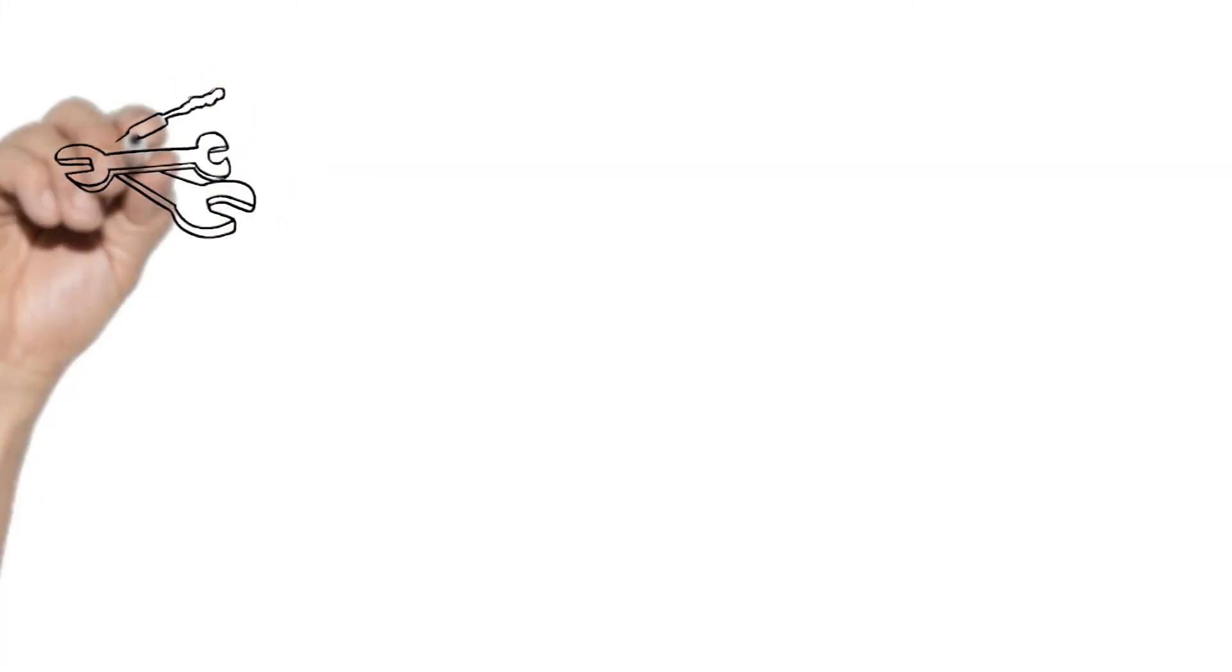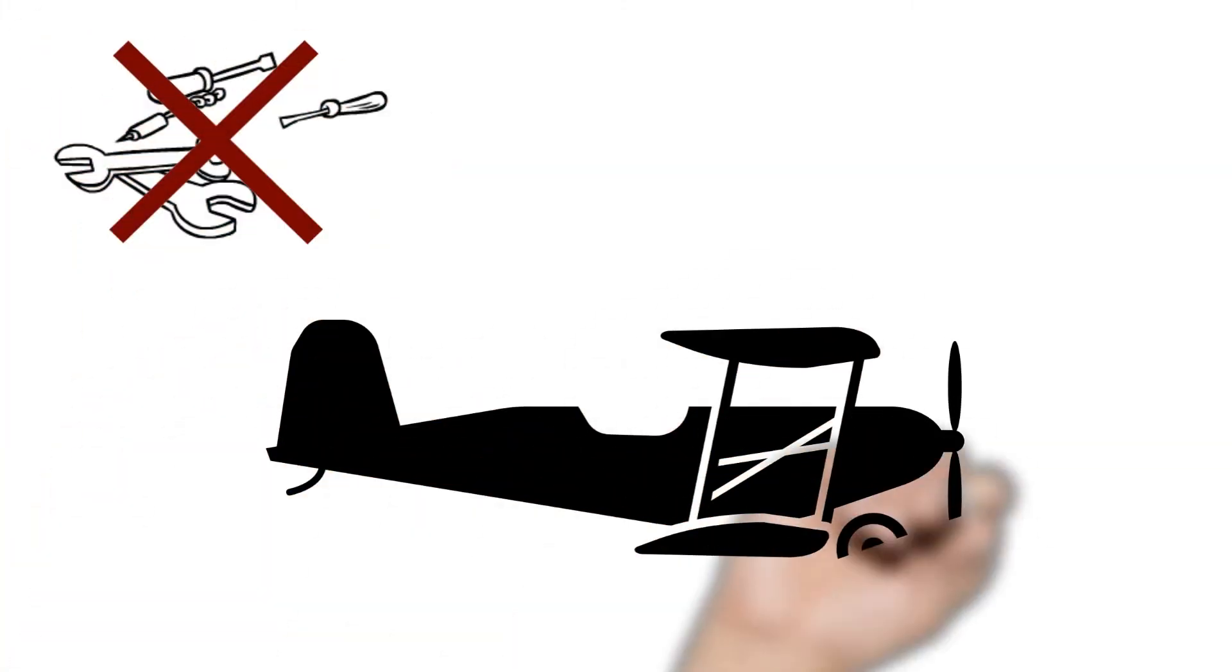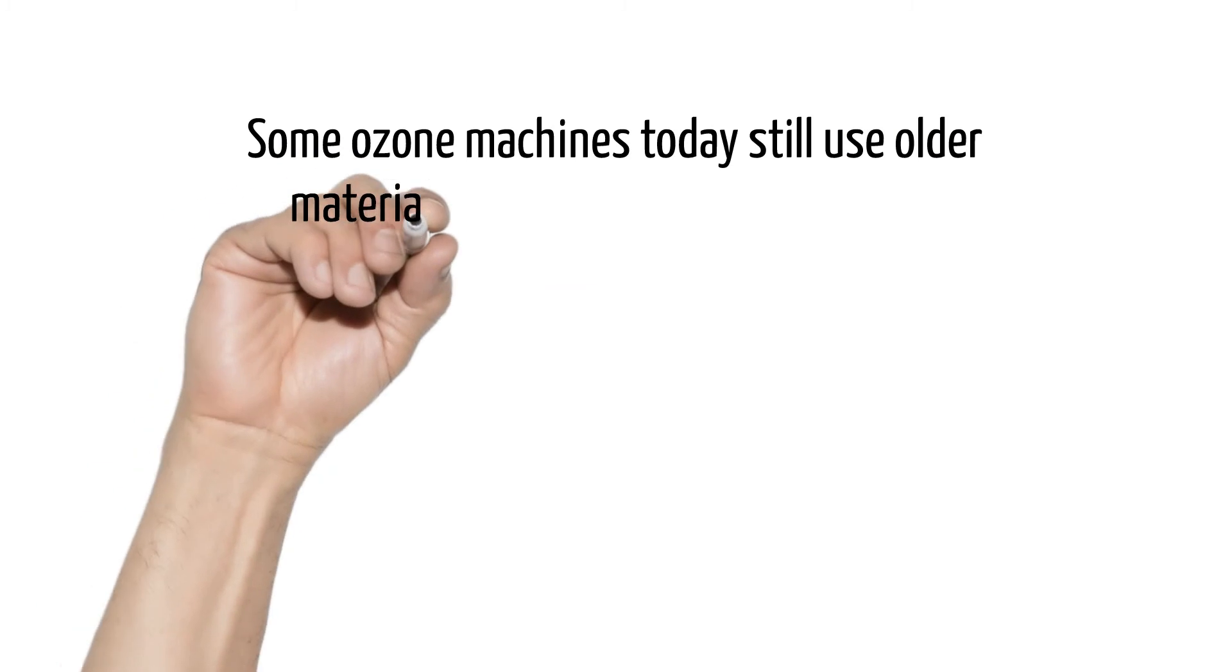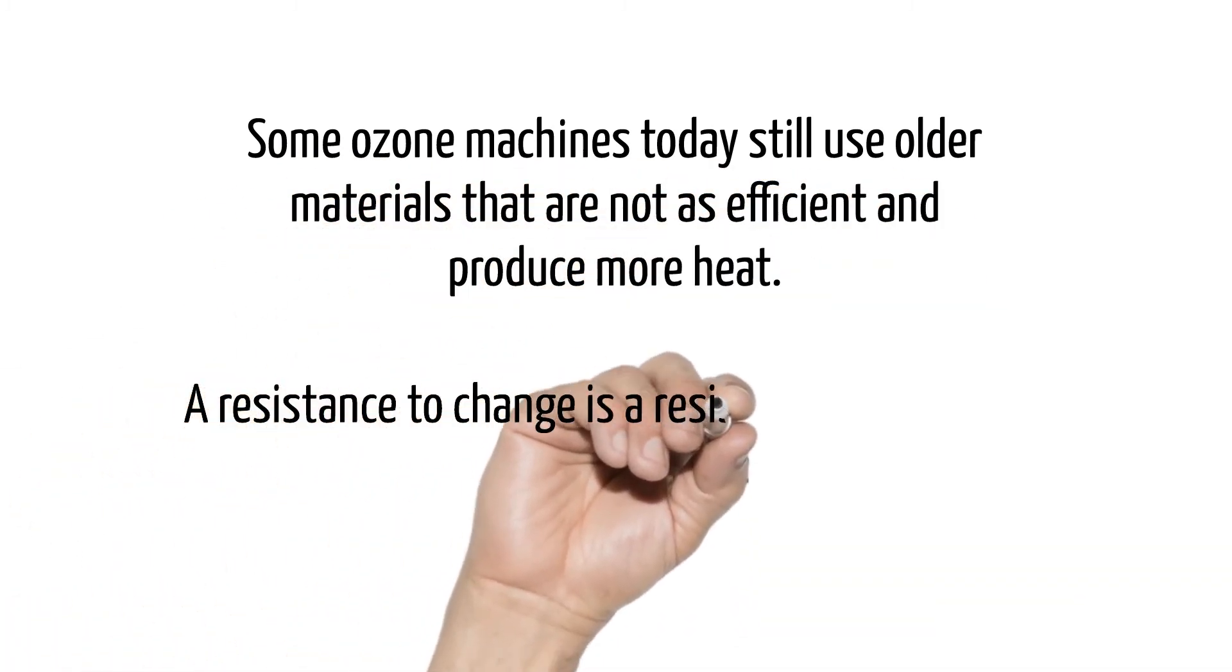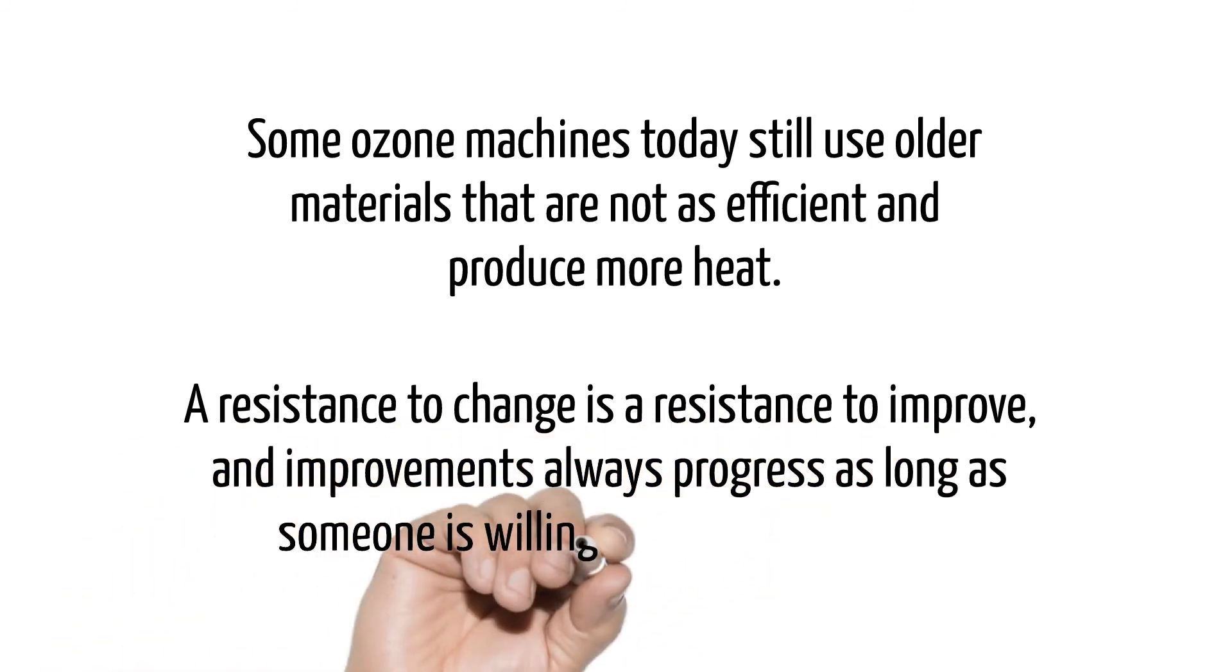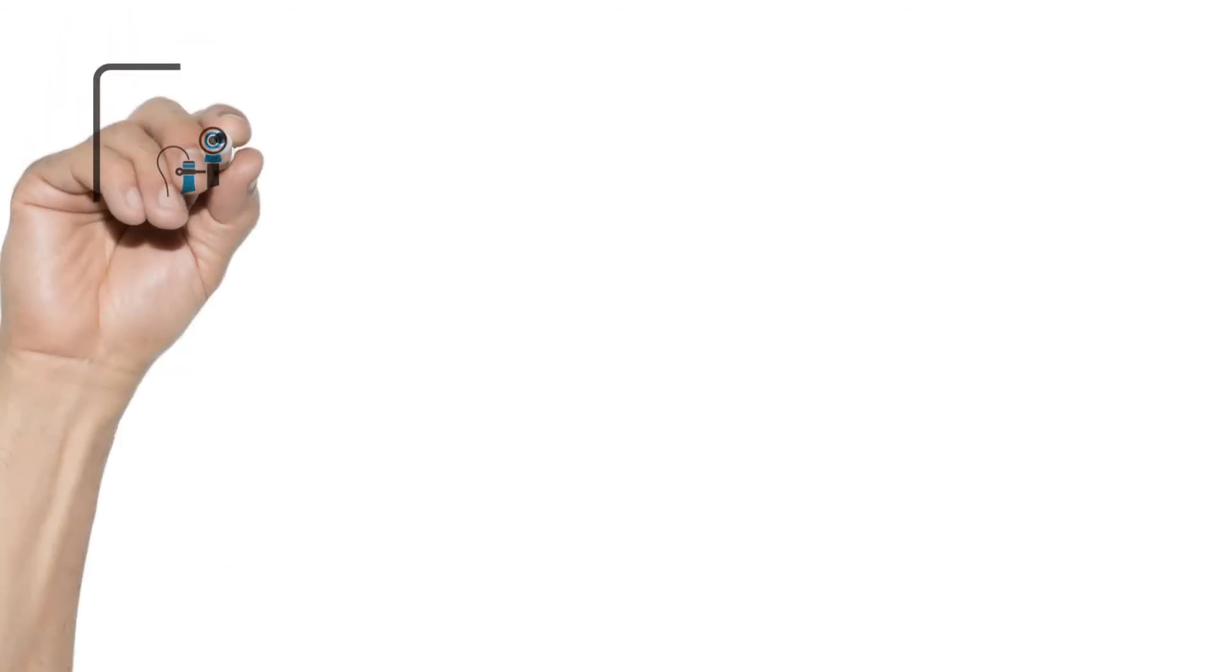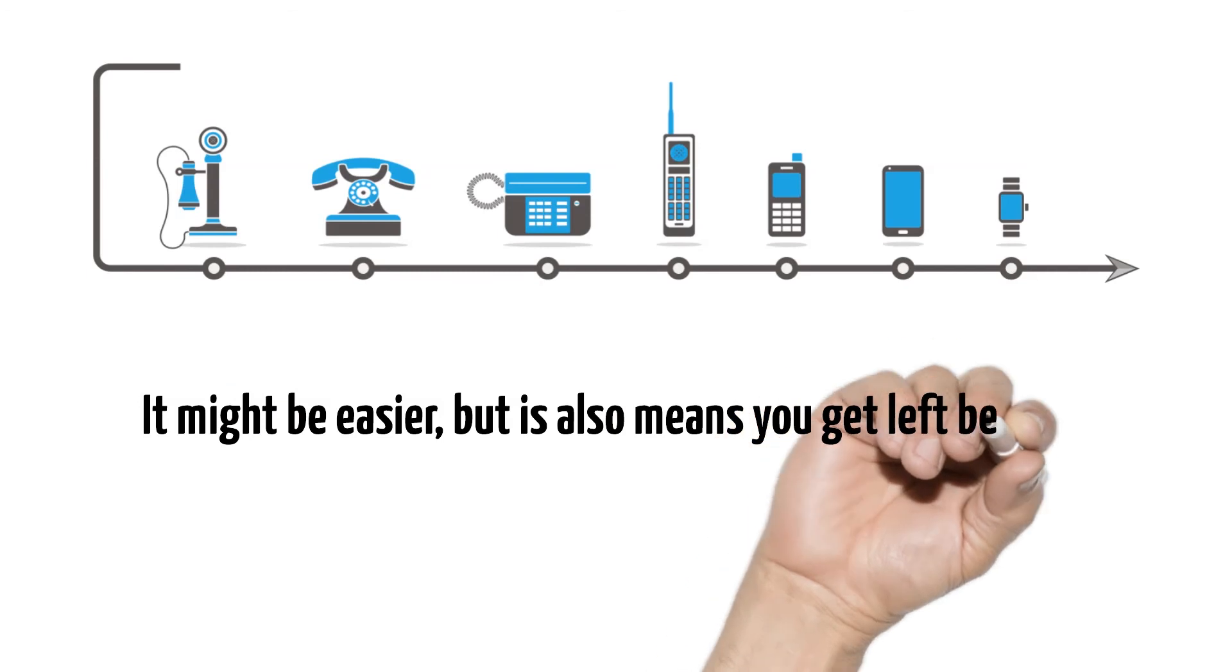It's strange to think about it, but if aircraft manufacturers never innovated with better materials, we might still be flying short distances in wooden planes today. Some ozone machines today still use older materials that are not as efficient and produce more heat. A resistance to change is a resistance to improve, and improvements always progress as long as someone is willing to put in the effort. Why stay behind the curve? It might be easier, but it also means you will get left behind.